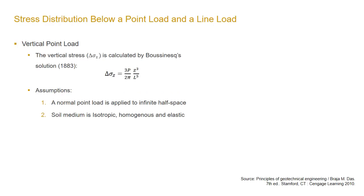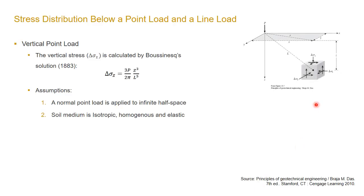Now we are going to study the stress induced by two specific types of loading: point load and line load. The figure on the top shows the scenario when a point load of magnitude P is applied to a soil mass, and we want to calculate the vertical stress delta sigma z at a point under the load at a horizontal distance L and at depth Z. Boussinesq proposed the solution in 1883.